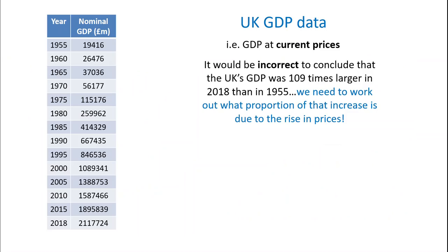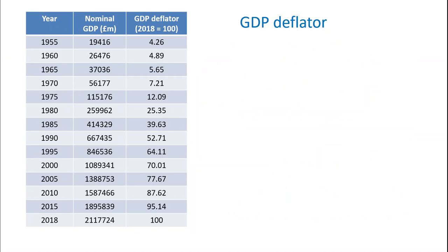To recap, it's GDP at current prices. What that means is it would be incorrect for us as economists to conclude that the UK's GDP in 2018 was 109 times larger than in 1955. What we need to do is work out what proportion of that increase in GDP is actually due to underlying inflation and the underlying increase in the general level of prices. We're going to build up to this slowly over the next couple of minutes.